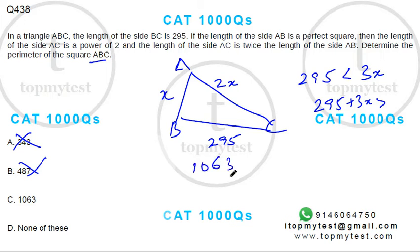So 1063, if I subtract 295 from this, that will be 768. If I divide by 3, this value will be equal to 3X. If I divide by 3, you will get 256.